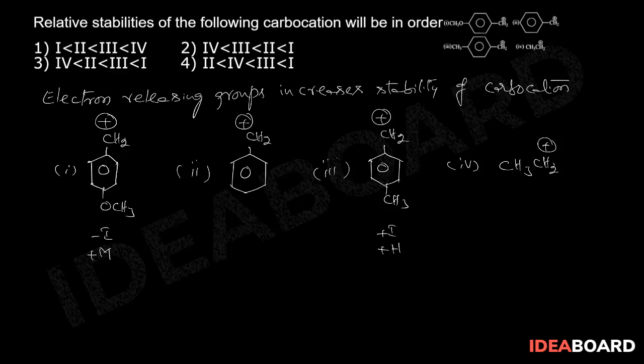So order of stabilities are taken: one is more stable than three, followed by two and then four. Or it can be written as four less than two less than three, followed by one. Three is correct option.